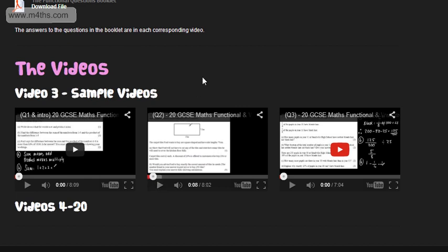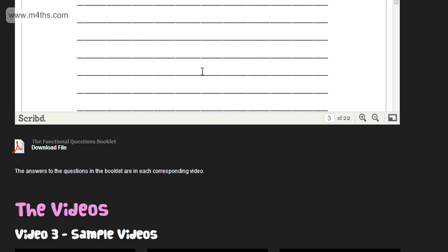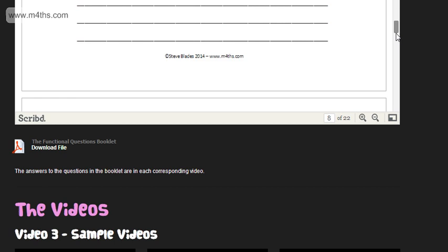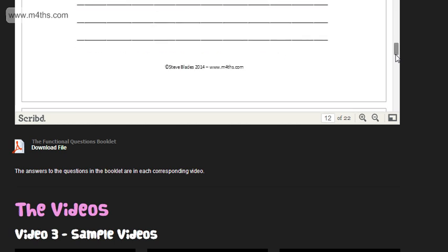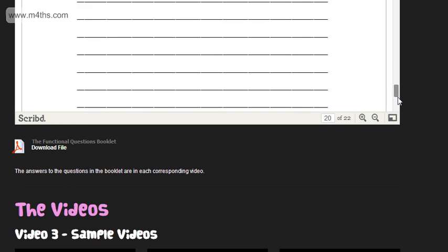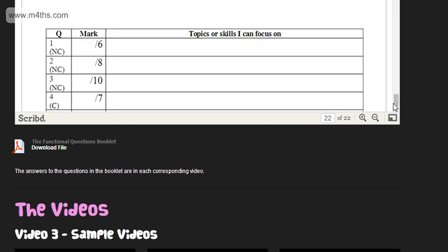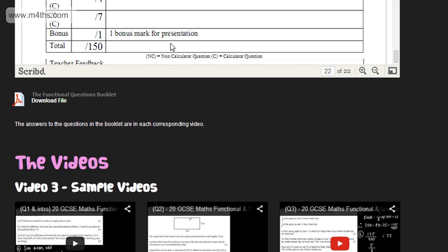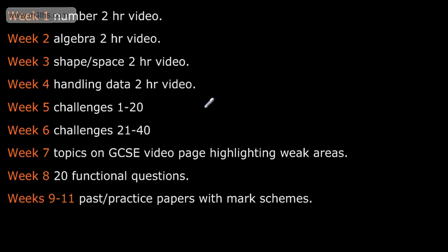Often these questions are what we call asterisk questions, and you're awarded marks for the quality of your written communication. So they're all in there. There's 20 of them, and they're aimed at C grade students. And at the end, we have a score sheet. So you can score yourself, and you can look at topics that you need to focus on. It's out of 150, and it's quite a nice way of doing it. So that gives us now the 20 functional questions, and that would be in week 8.